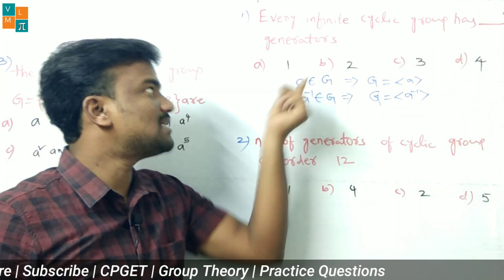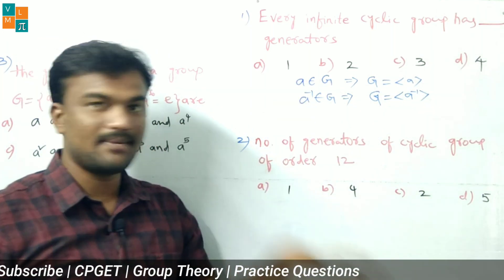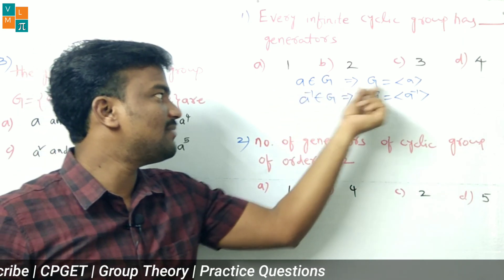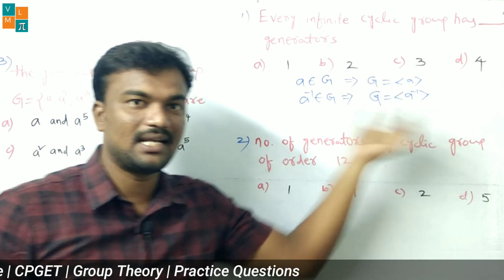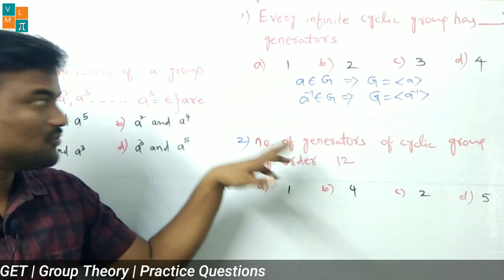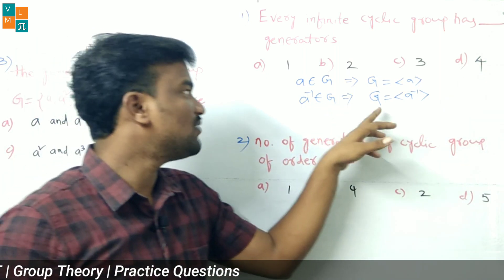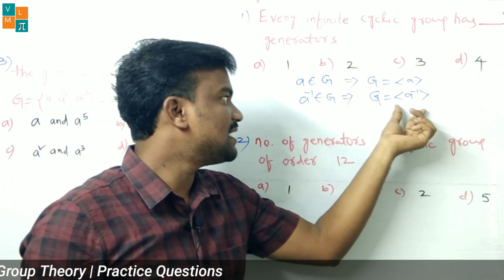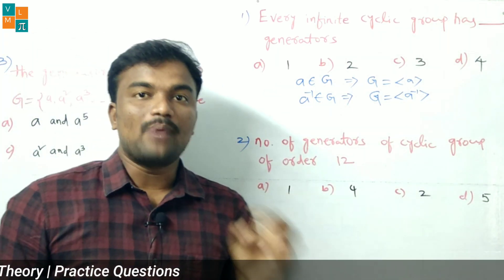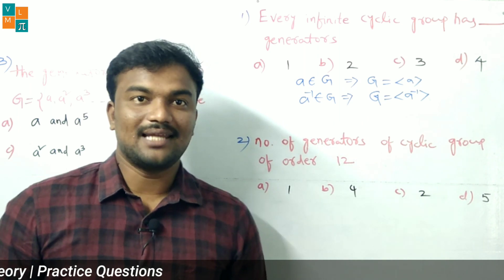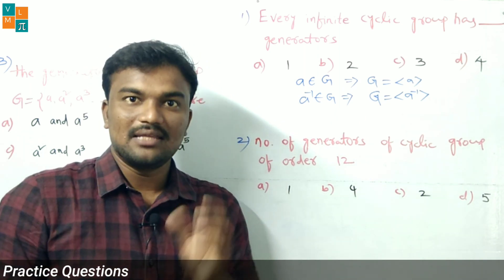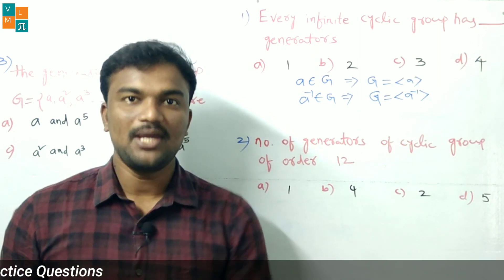G is an infinite cyclic group — cyclic group means it is generated by some element. Taking element a belonging to G, we write G = ⟨a⟩. If a belongs to G, then a inverse also belongs to G, which implies G = ⟨a inverse⟩. Remember: an infinite cyclic group has only two generators, that is a and a inverse. Similarly, if b belongs to G, then b and b inverse are the two generators.